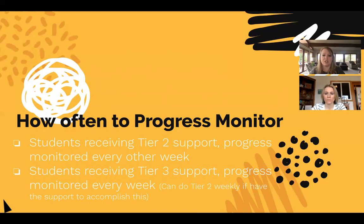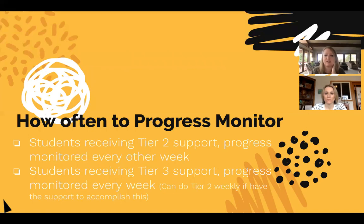Know that there are a limited number of passages to progress monitor with — approximately 20 per year — so you have to ration those out throughout the year. But this can look different ways depending on your building.